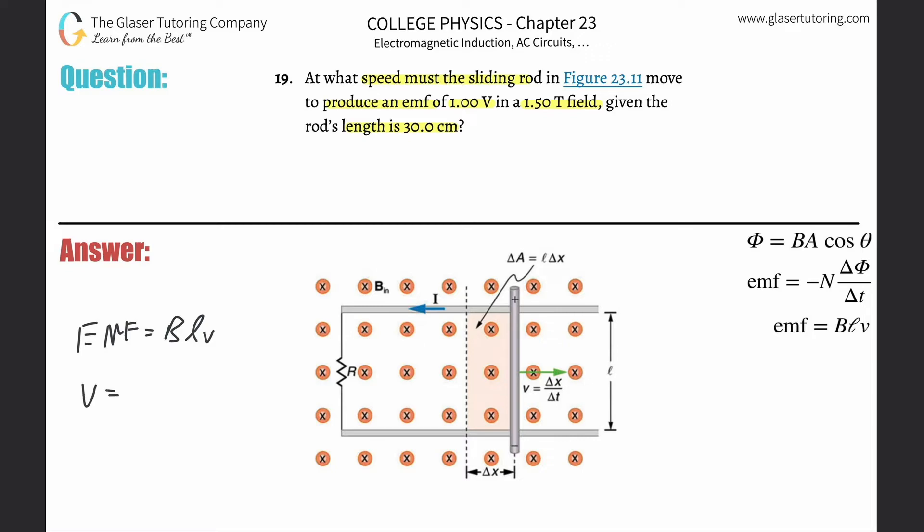So to find that velocity just simply divide out then the magnetic field and the length. EMF then was 1 volt. The magnetic field is 1.5 and the length, be careful, you need to convert that into meters. They gave it to you in centimeters. So that's just going to be 1 divided by 1.5 times 0.3 and 2.22. So 2.22 meters per second and that's the velocity.